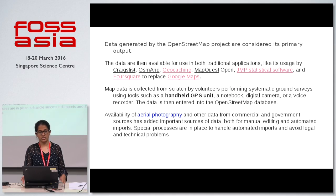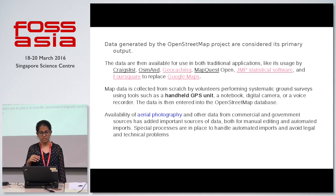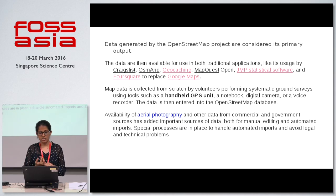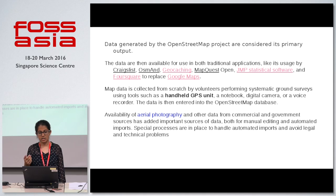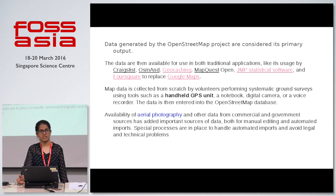Data generated by OpenStreetMap is considered its primary output. This data is available for use as an alternative to Google Maps, used in applications like OSM, geocaching, MapQuest, and others. The data is collected from GPS units, digital cameras, and other cheap, readily available sources. Aerial photography and data from commercial and government sources also contribute, and all of it is free.